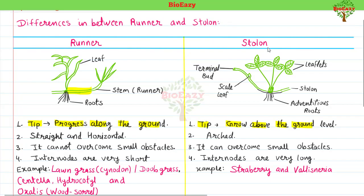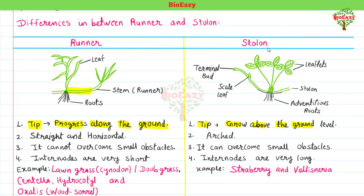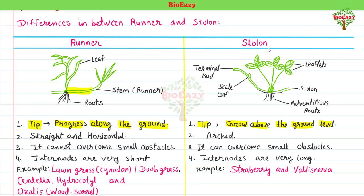The very first difference is: the tip of a runner progresses along the ground — the tip of the runner grows parallel to the ground. But the tip of a stolon grows above the ground level, in an arc shape.